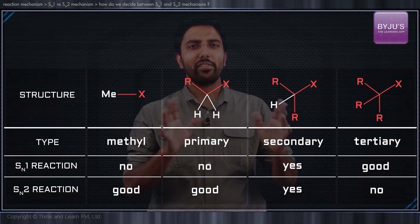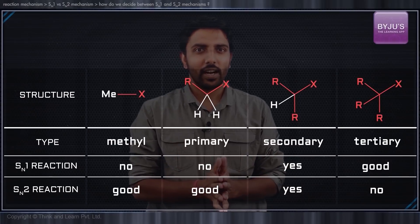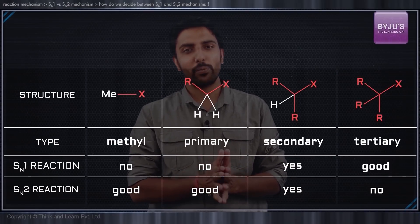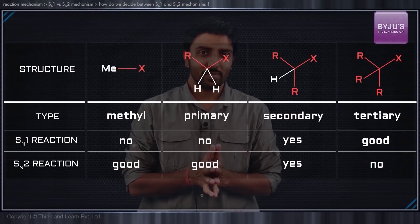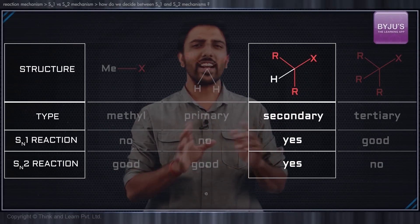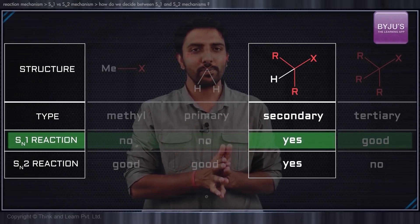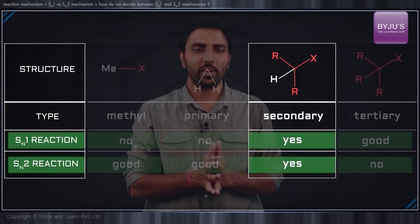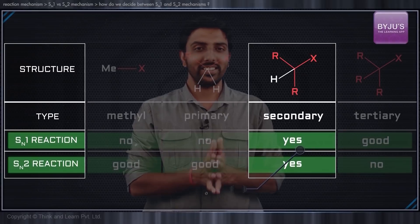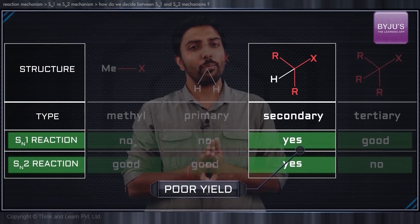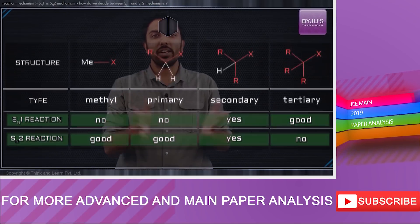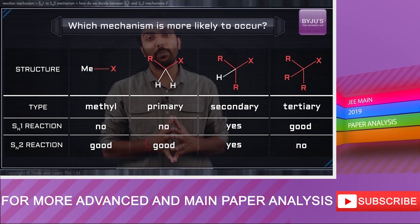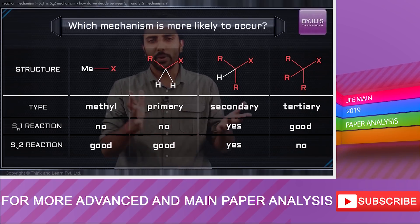Now let us bring back a table to compare the effect of simple variations in structure and the feasibilities of SN1 and SN2 reactions. As you can see from this table, secondary alkyl halides can react either by the SN1 mechanism or the SN2 mechanism, but in both cases the yield happens to be poor. So if we are given a substrate and asked to determine which mechanism is more likely, how do we go about that?